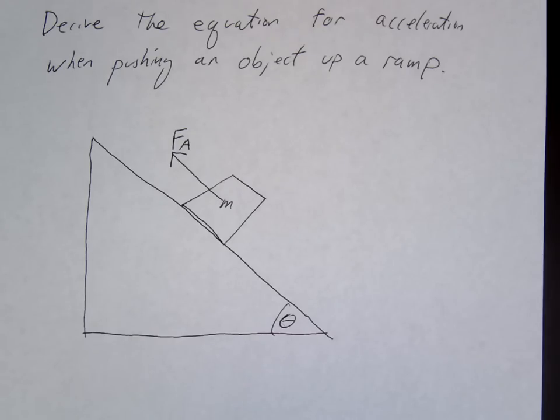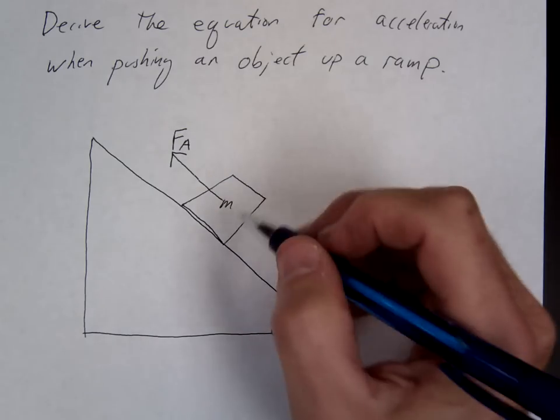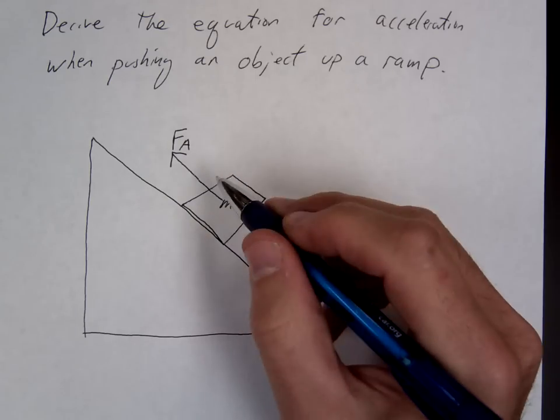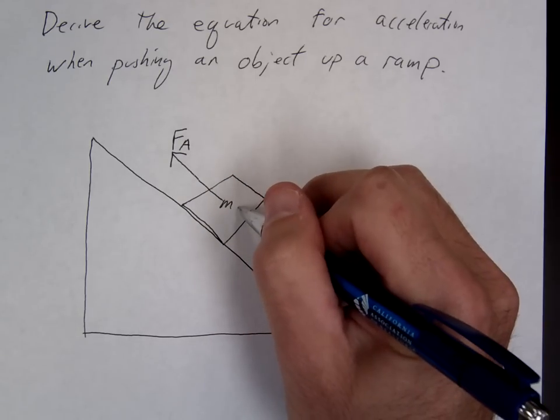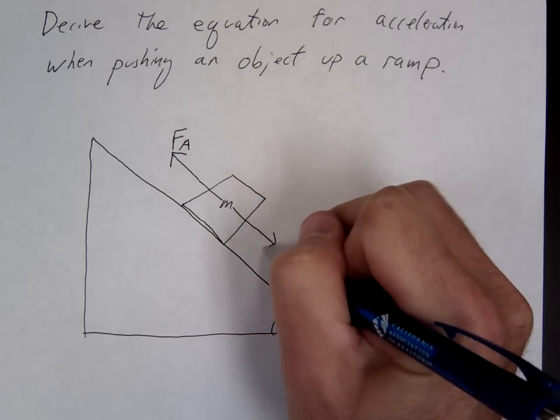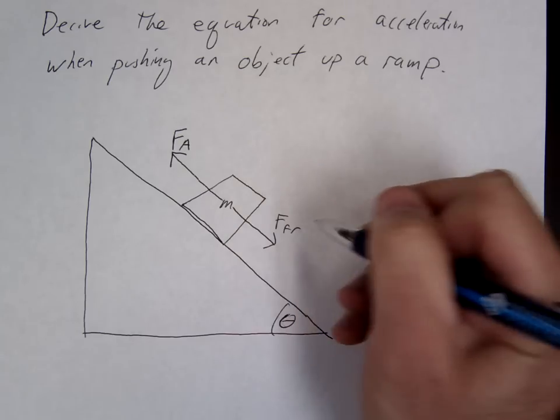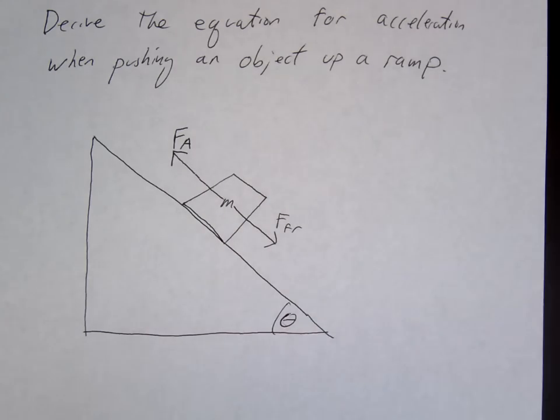What direction is friction? Is it down the ramp or up the ramp? Down the ramp. And why is it down the ramp? It's opposite of the motion. So if I told you that it's going up the ramp, then friction would be down the ramp. Now if the motion is down the ramp, then friction would oppose that and it would be up the ramp.